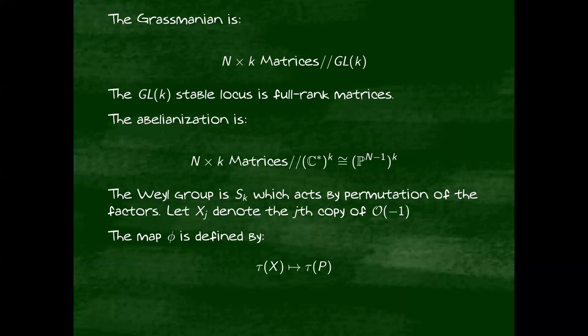In our notation, tau of X maps to tau of P for a symmetric function tau. You can use this to derive many things about the K-theory of the Grassmannian. The version of this works for cohomology. I think it's an open question in general, how to think of Schubert calculus in these terms. One would hope that something like this also works for a quantum invariant, for quantum K-theory.